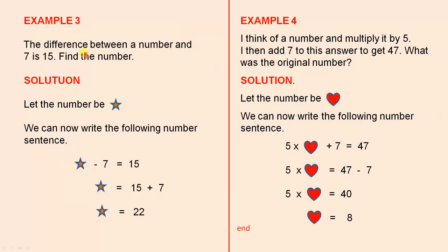Example 3. The difference between a number and 7 is 15. Find the number. Difference means subtraction. So let the number be a star. We can now write the following number sentence: the star minus 7 equals 15. The star equals 15 plus 7, so the star is 22. 22 minus 7 is 15.